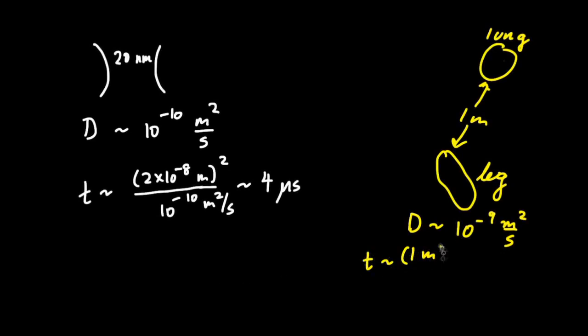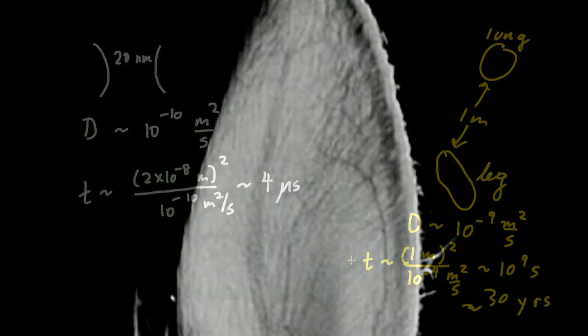You should have found that the diffusion time is roughly 10 to the ninth seconds. That's roughly 30 years! Over long distances, diffusion is a lousy method of transport. That's why we need a circulatory system. Using a dense network of capillaries, the circulatory system brings oxygen-rich blood near every cell, and only then, when the remaining distance is tiny, does it let diffusion finish the job.